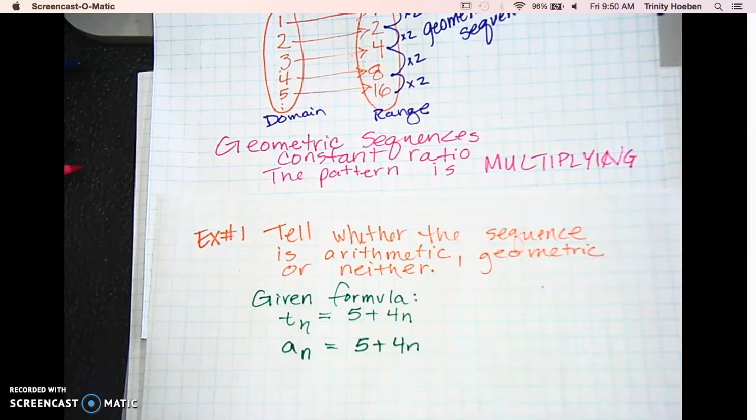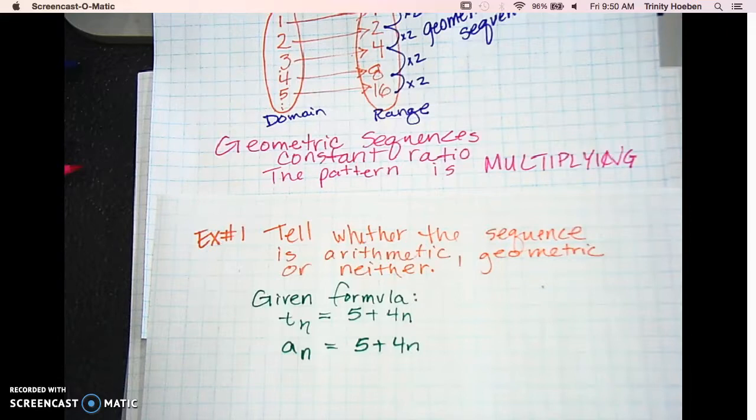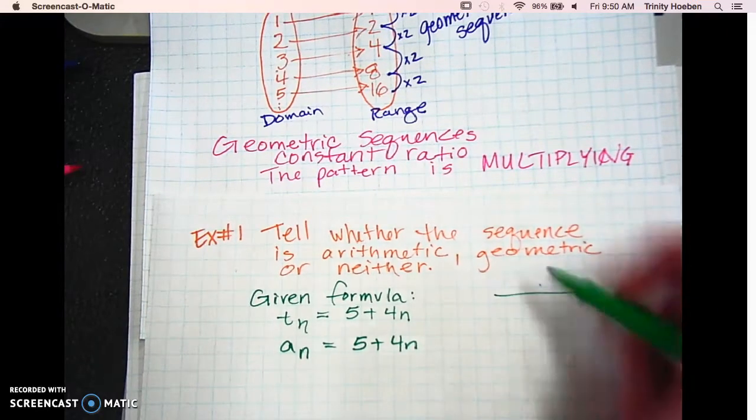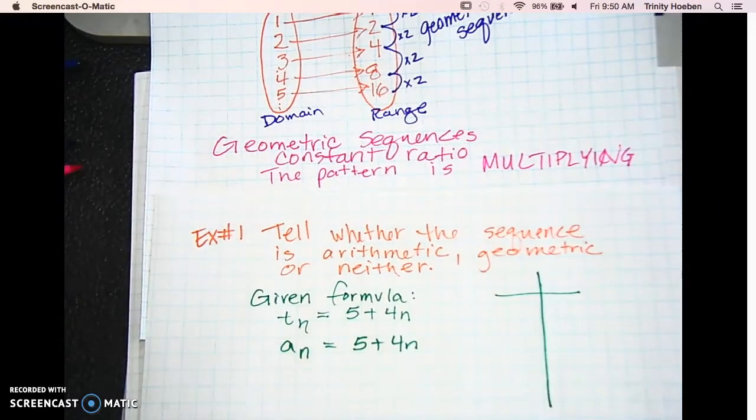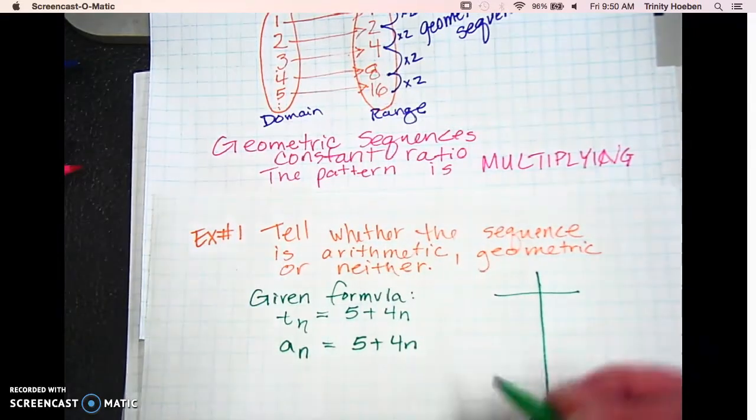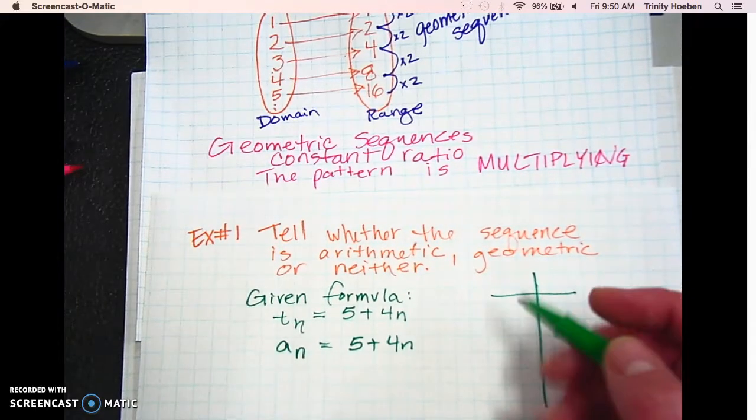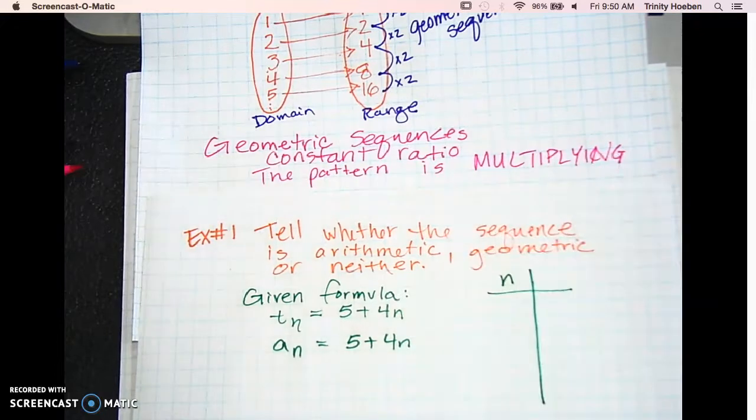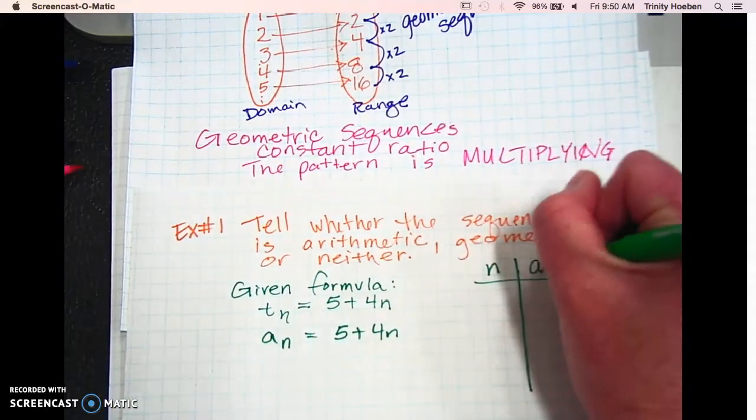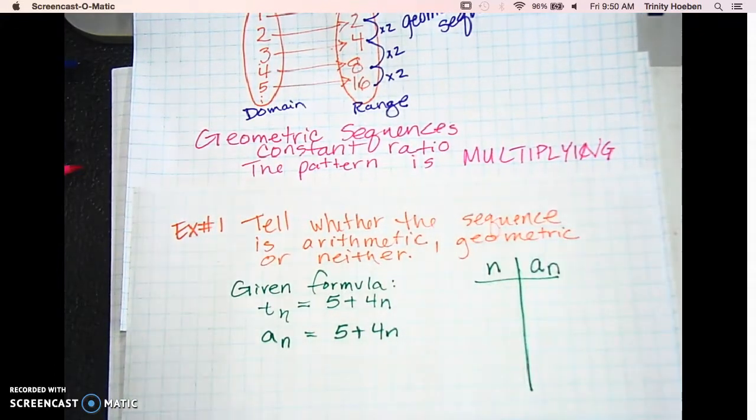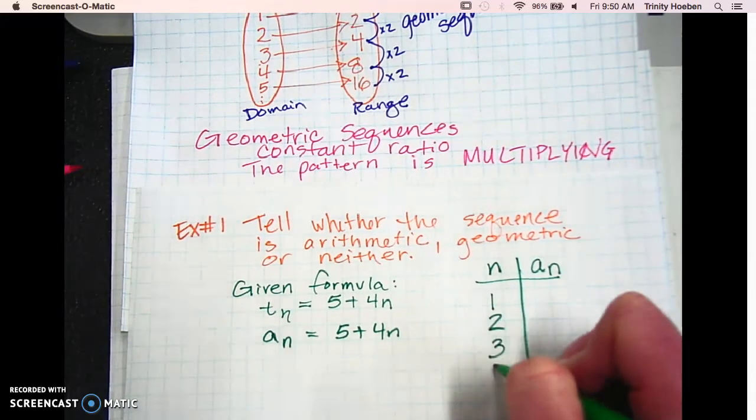So the variable can switch. It just means you're going to plug in numbers for the n. And then you're going to spit out. So if it helps you, make a t-chart. So you're going to pick numbers for n. And then it's going to spit something out for a sub n or t sub n. So start easy. Let's start with 1, 2, 3, 4.